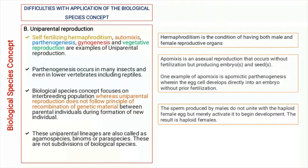Next is uniparental reproduction, which means the reproduction process involves only a single parent. It occurs in cases of hermaphroditism, where both male and female sex organs are present in a single individual. Automixis means that the gametes are produced within a single individual and fusion of those gametes also occurs within that particular individual.